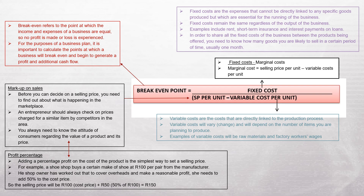Profit percentage: adding a percentage profit on the cost of a product is the simplest way to set a selling price. For example, a shoe shop buys a shoe at R100 per pair from the manufacturer. The shop owner needs to add 50% on the cost price to cover overheads and make a reasonable profit. So the selling price will be R100 cost price plus R50 profit margin, equaling R150. Remember: selling price equals cost price plus profit margin.